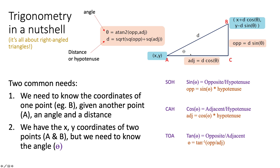Typically we are doing one of two things. Either we need to know the coordinates of one point — we have point A, an angle, and a distance — and we're trying to calculate the coordinates of point B. The second thing we often want to do is we have both points and need to calculate the angle. We can use Pythagoras' theorem to get the distance between the two points, then we use trigonometry to calculate the angle.